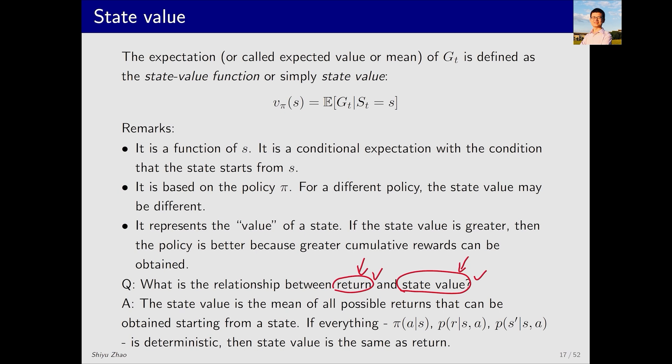If starting from a state, we may have multiple trajectories. Then, it is clear that there is a difference between return and state value. However, if everything is deterministic so that starting from a state leads to only one possible trajectory, then the return and the state value of that state would be identical.